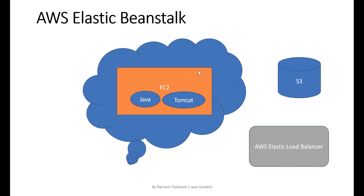Elastic Beanstalk will store the JAR or WAR file you upload on S3, and there is also an AWS Elastic Load Balancer component that will redirect your application on a particular port. So if we don't use Elastic Beanstalk, we need to do all this stuff manually.